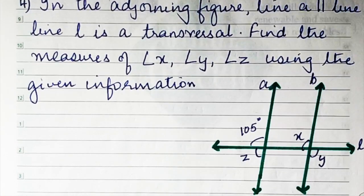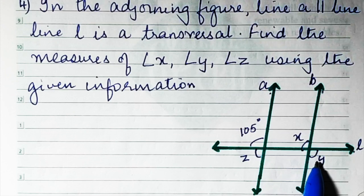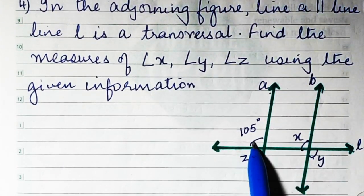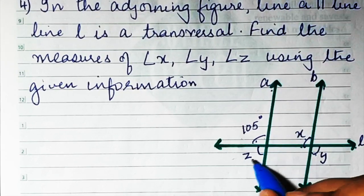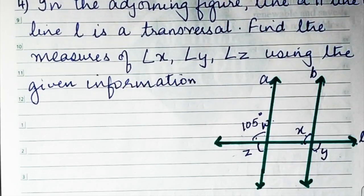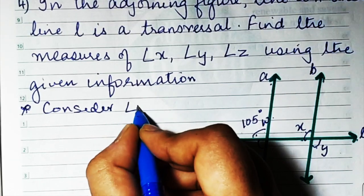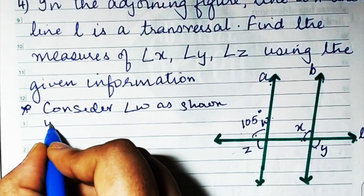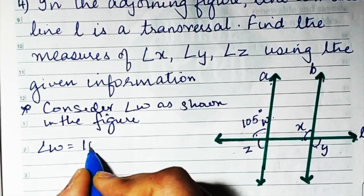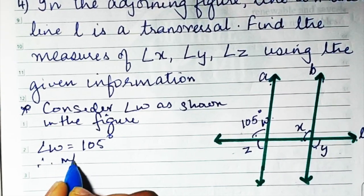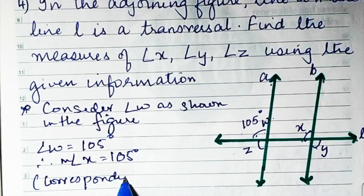In sum number 4, line a is parallel to line b and line l is the transversal. We need to find x, y, and z. The given angle is 105°, so corresponding angles give us the same value. Let's call this auxiliary angle w. Consider angle w as shown in the figure — w is 105°, so x is going to be 105° by corresponding angles.